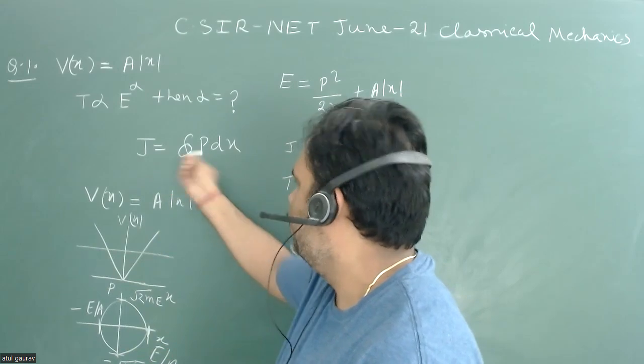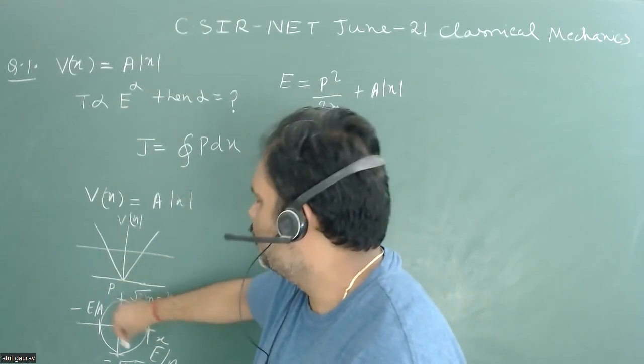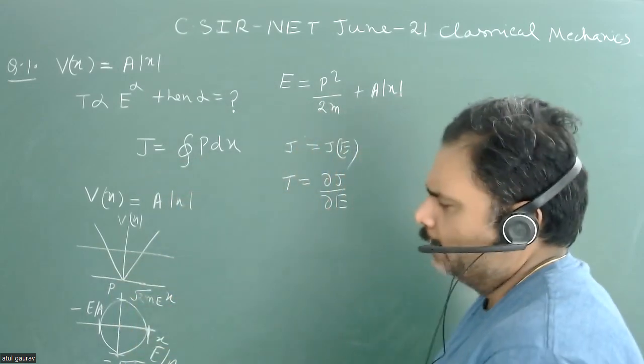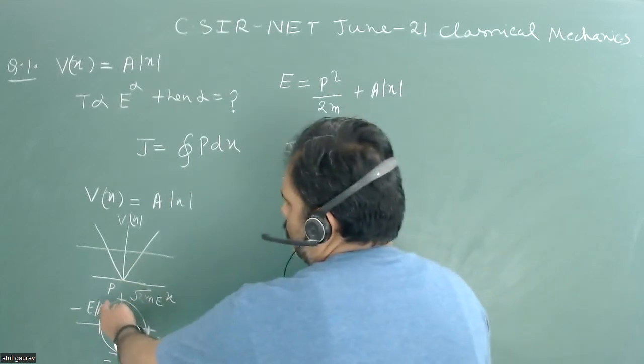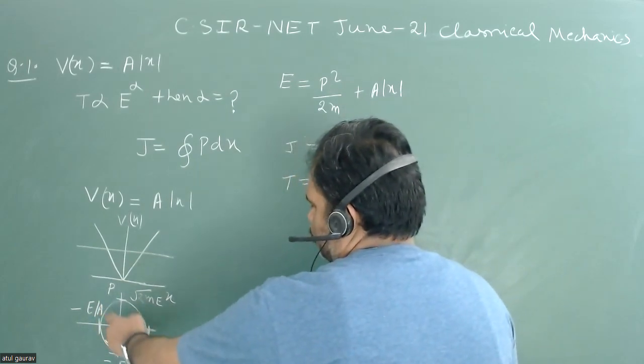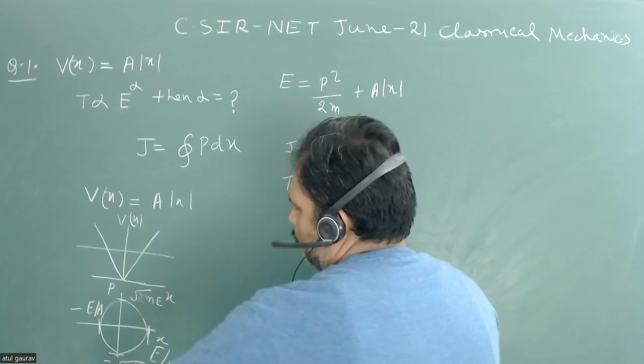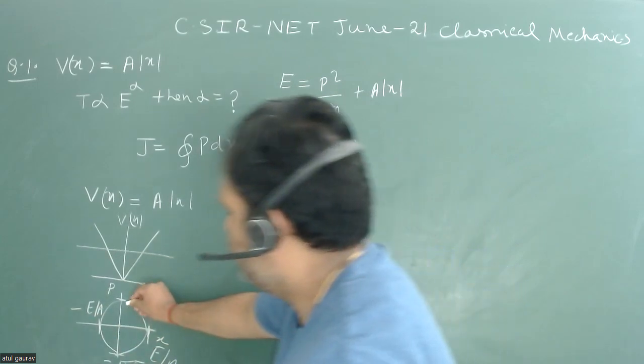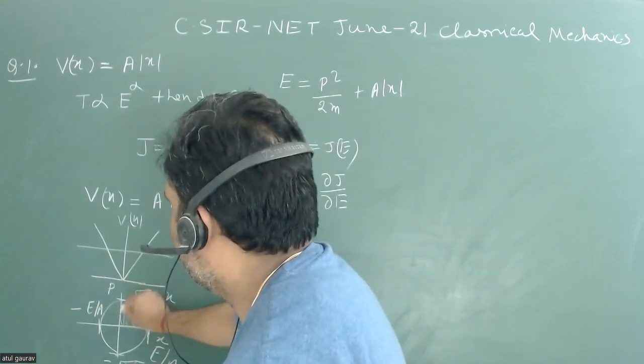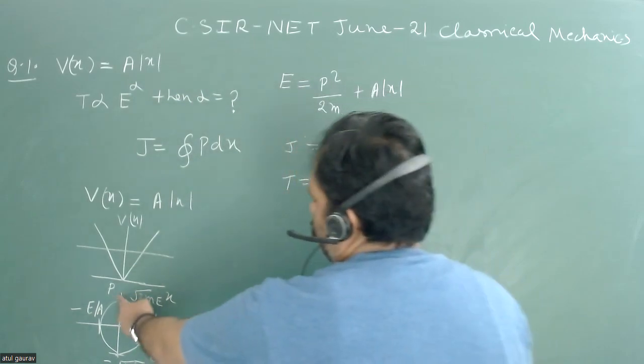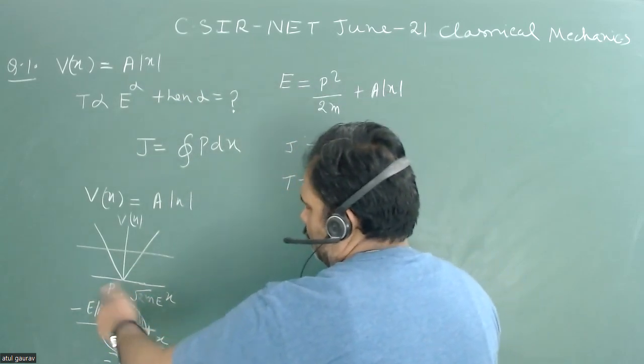Let's try to calculate this particular area. If we're going to calculate J, that is p dx, that is nothing but the area under the curve. I am going to calculate this area and multiply with four, then obviously we will get the complete area. So I am just going to calculate this area and I will multiply it by four.